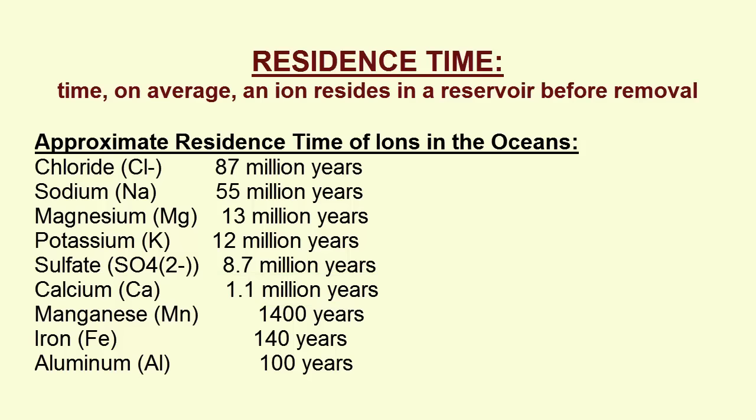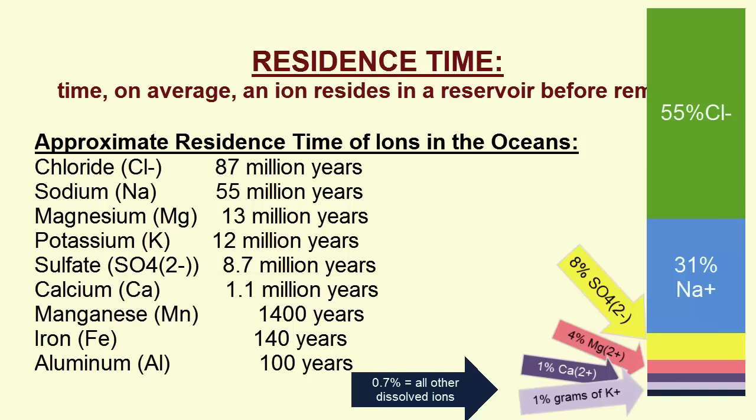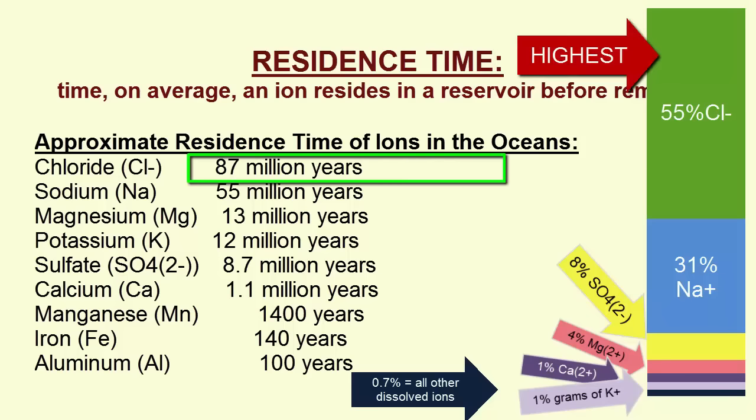What do you notice about this list so far? It's almost exactly identical to the list of major ions in the ocean in the same order. So the primary reason that chloride is found in the highest abundance in the oceans is because it has the longest residence time. That makes it very hard to change its composition.